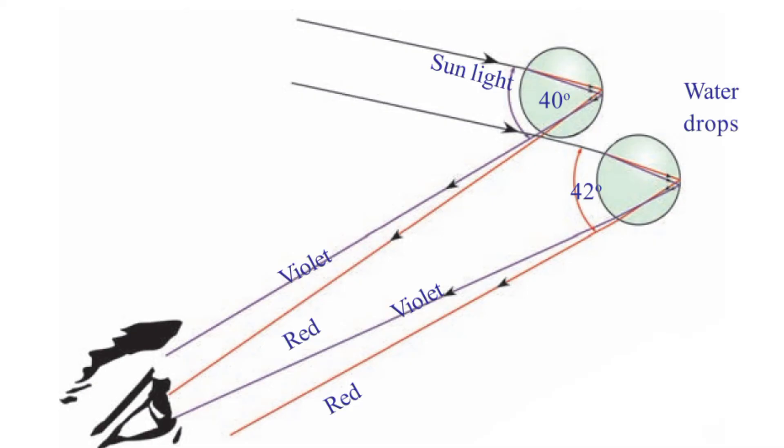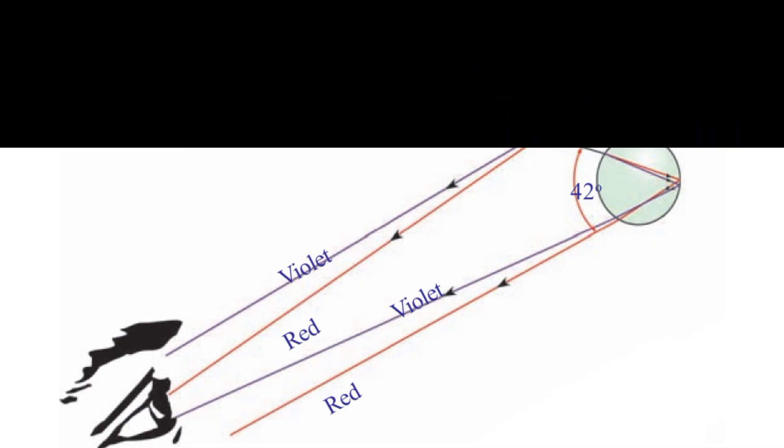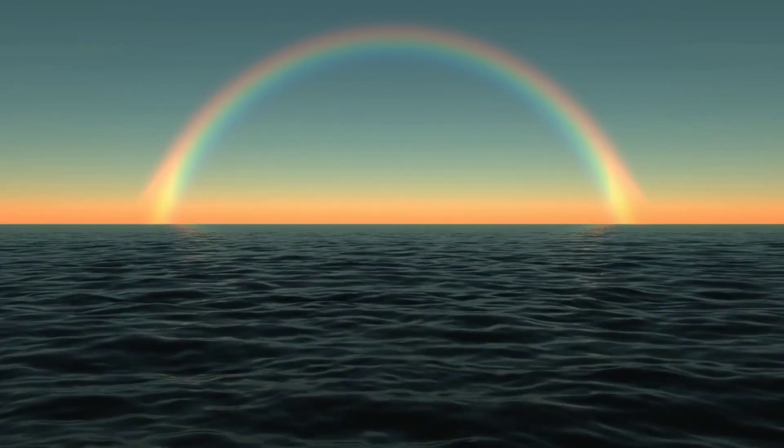If you look at an angle between 40 degrees to 42 degrees, you will observe the remaining colors of rainbow.